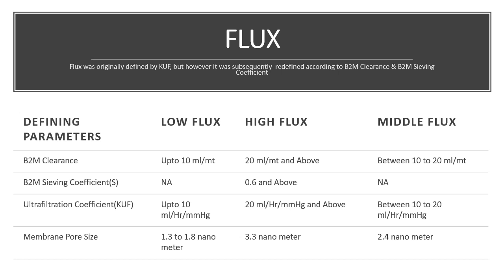High flux dialyzers have a beta-2 microglobulin clearance of 20 ml per minute and above, a beta-2 microglobulin sieving coefficient greater than 0.6, an ultrafiltration coefficient of more than 20 ml/hr/mmHg, and a median pore size of 3.3 nanometers.